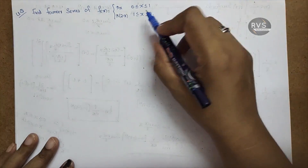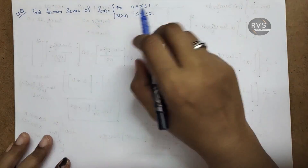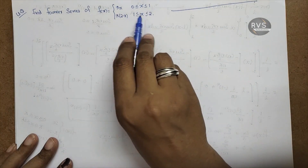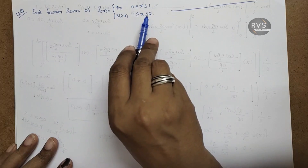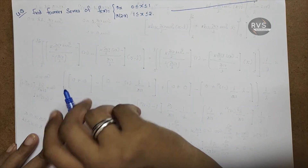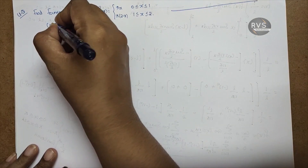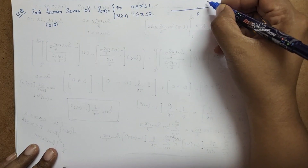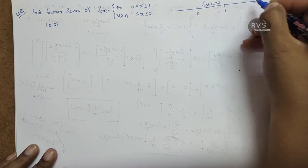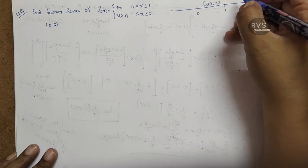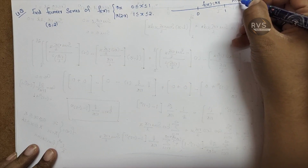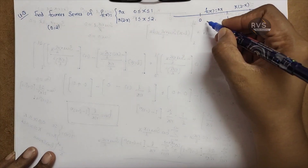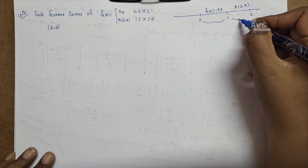Now we have to find the Fourier series for F of x. The total interval is 0 to 2. What is F of x? The value of F of x is πx from 0 to 1, and π(2 minus x) from 1 to 2. We have to split the interval: 0 to 1, and 1 to 2.